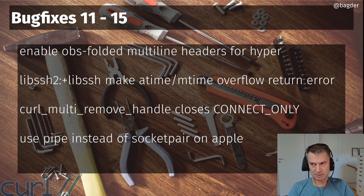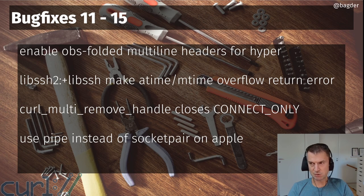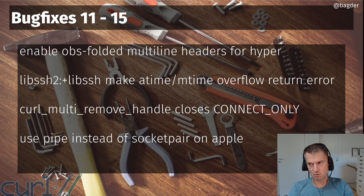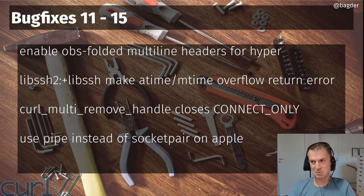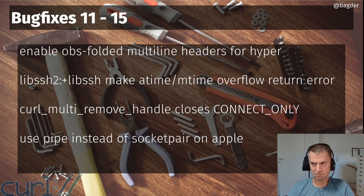If you build curl on Apple devices — not just macOS but also iPad, iOS, tvOS, watchOS — we now use a pipe instead of a socket pair for the wake-up functionality in curl_multi_wait. On Apple platforms, the OS can kill a socket pair when the application is in the background, but it doesn't kill pipes. So it's now a build-time conditional: Apple platforms use pipe instead of socket pair, and we'll likely expand this to more platforms going forward.